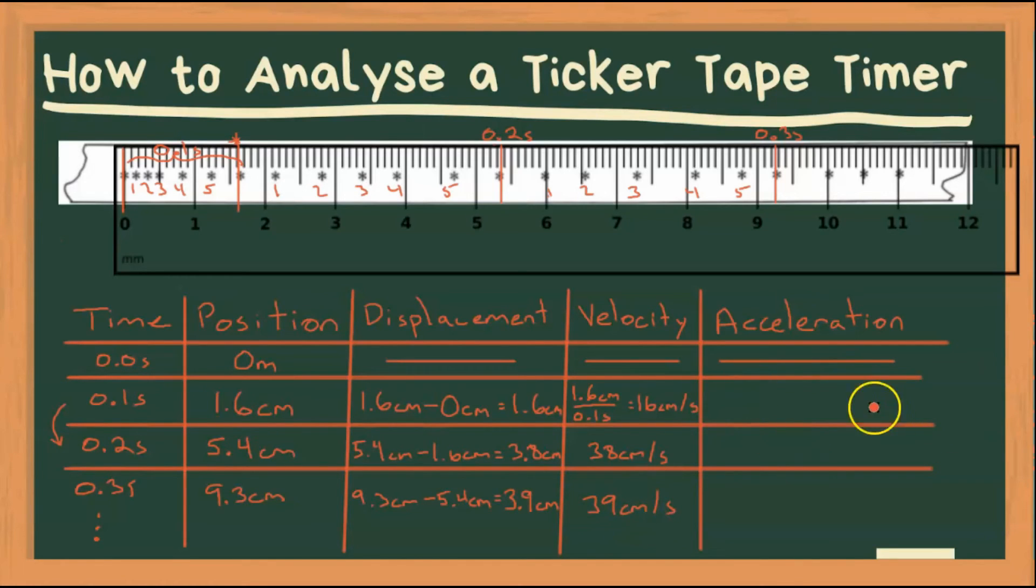Lastly, acceleration. Now acceleration is equal to the change in velocity over time. So I can't do anything here because I only have one velocity. Over here I can do a change in velocity, which is final 38 centimeters per second minus initial, or the previous reading of 16 centimeters per second, all over that time interval. How much time has passed from here to here? Well, 0.1 seconds.